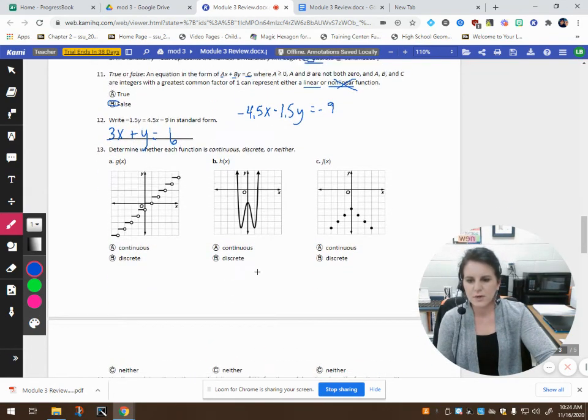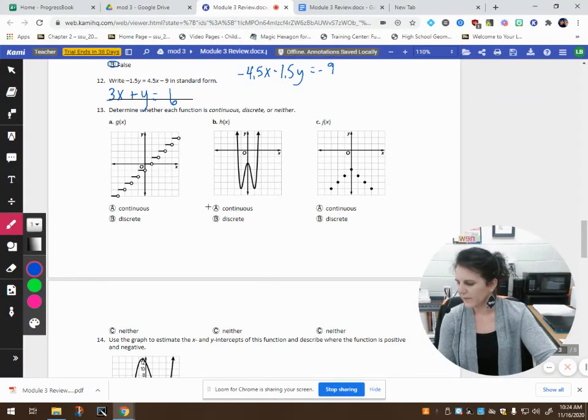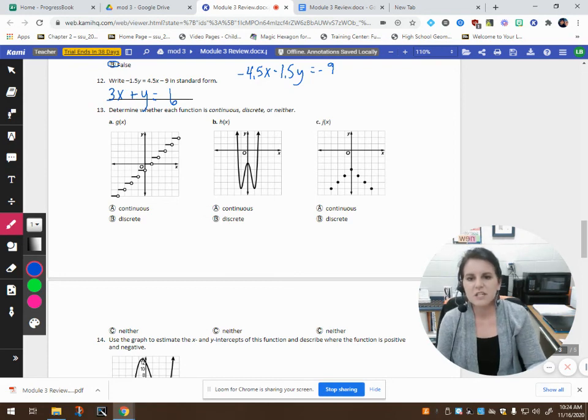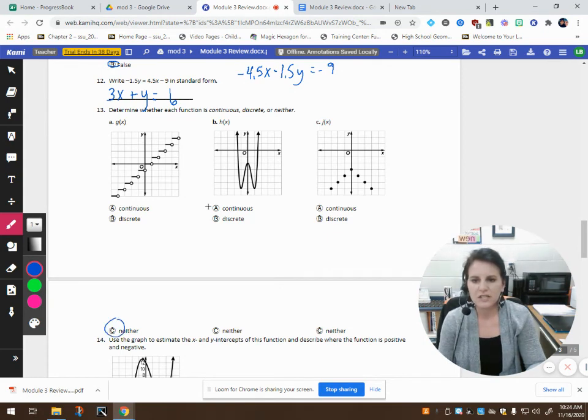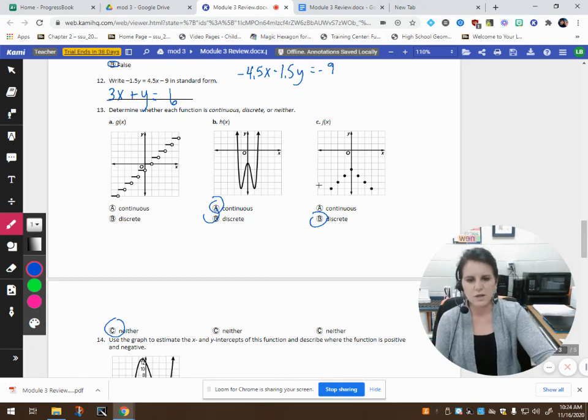We're going to finish up with number 13, and then I want to stop there for this video. So, number 13 says, to determine if it's continuous, discrete, or neither. Well, clearly this is neither because it's partially continuous, but then it breaks. So, we can't say that it's discrete because there is a little bit of continuity. We can't say it's continuous because there are breaks, so it has to be neither. This one is obviously continuous, and this last one is discrete, and that is where we will stop this video.